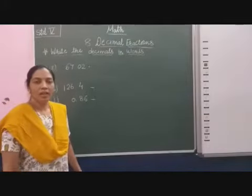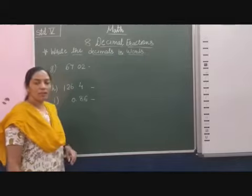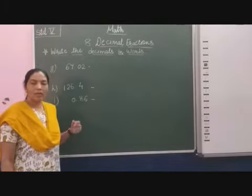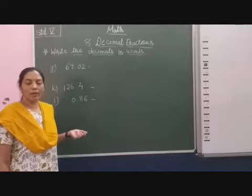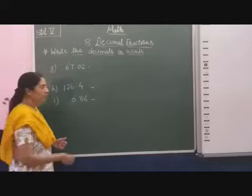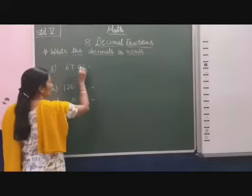Now students next decimal number is given 67.02. So here just I will also show you how we will write this decimal in the word with use the point. Word that 67.